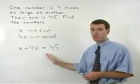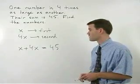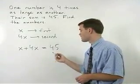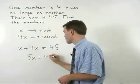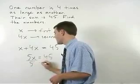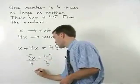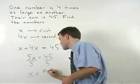Now we have an equation and we can solve for x. We start by simplifying the left side to get five x equals forty-five. Divide both sides by five and x equals nine.